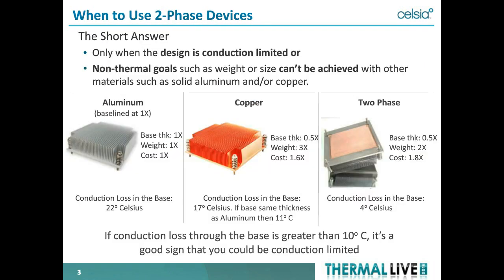When to use a two-phase device? The short answer is always when your design is conduction limited — you're not going to move away from a piece of metal to something else unless there's a reason to, and in this case it's always the conduction limit that's reached. There are other reasons you may want to use it — non-thermal goals such as weight or size, since vapor chamber or heat pipe devices can sometimes be smaller or lighter than an equivalent performance solid material.